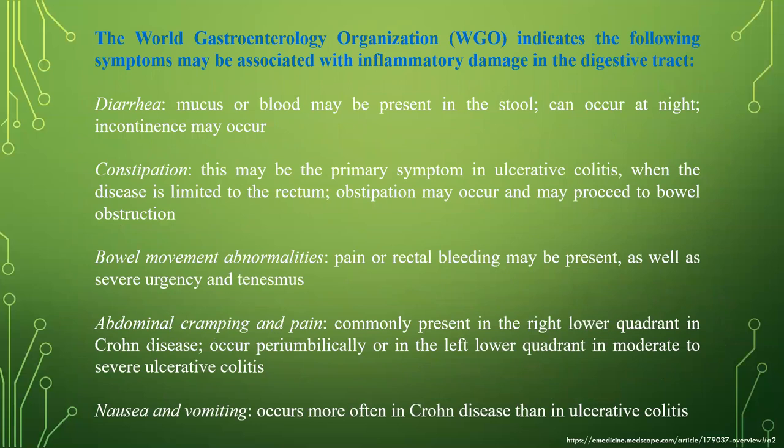The World Gastroenterology Organization indicates the following symptoms may be associated with inflammatory damage to the digestive tract: diarrhea, with mucus or blood possibly present in the stool, which can occur at night. Constipation may be the primary symptom of arthritis when disease is limited to the rectum. Obstipation may occur and may proceed to bowel obstruction. Bowel movement abnormalities with pain or rectal bleeding, severe urgency, and tenesmus. Chronic ulcerative colitis commonly presents with abdominal cramping and pain in the lower right quadrant in Crohn's disease, periumbilically or in the left lower quadrant in moderate-to-severe ulcerative colitis. Nausea and vomiting occur more often in Crohn's than in ulcerative colitis.